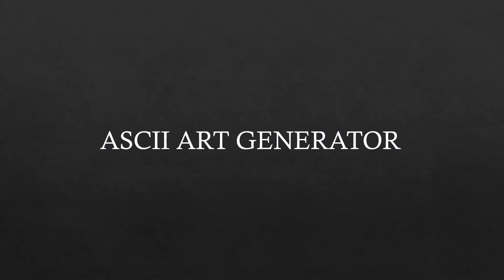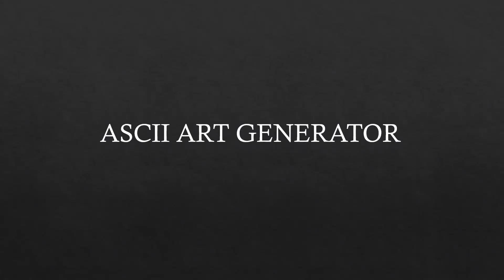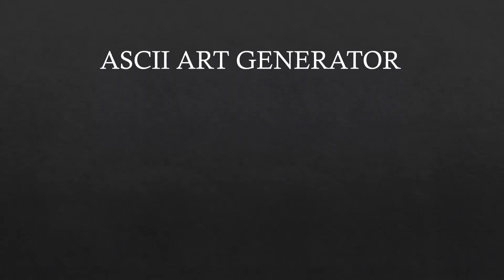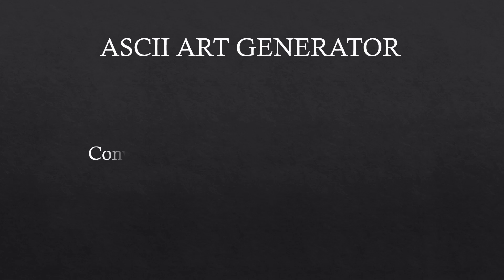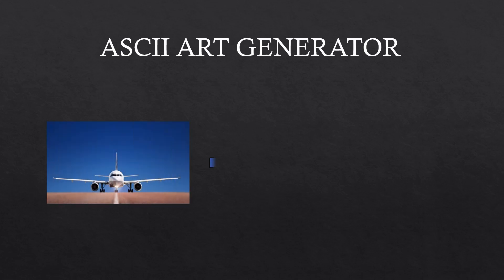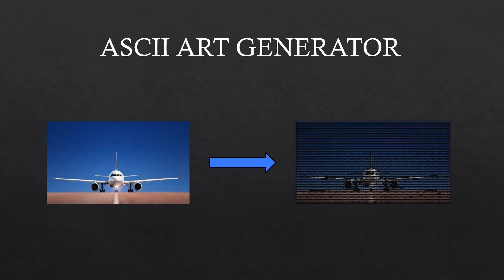In this video, we will build an ASCII art generator in C. In the process, we will learn about convolutions in image processing and clustering. At the end of the video, you should have a program that can take an image and generate an ASCII art equivalent like this. Without further ado, let's dive in.